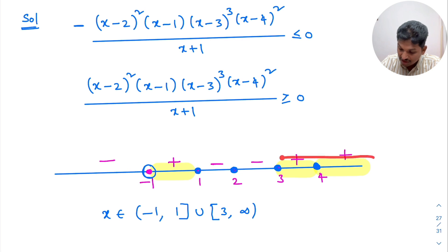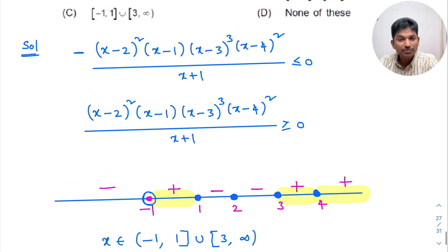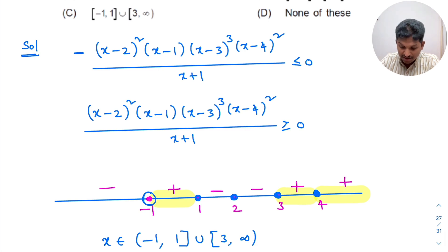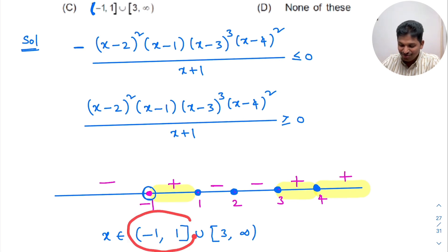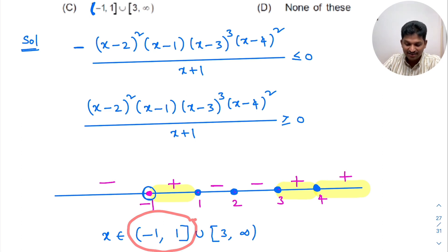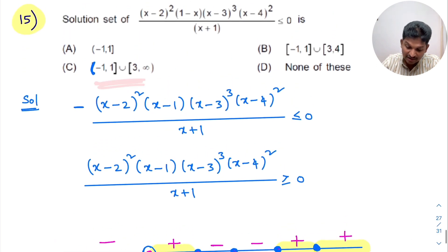This whole region comes including 4 — if you put x = 4, the expression equals 0, satisfying ≥ 0. Observing the options: the interval open -1 to closed 1, union 3 to infinity — the third option is the correct answer.